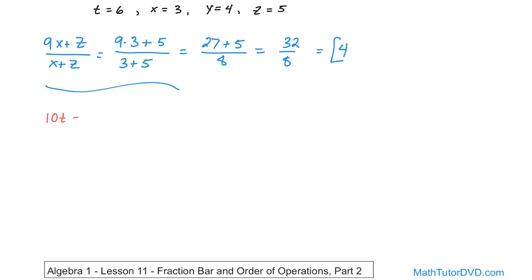10 times t minus z over 10 parentheses t minus z. So let's substitute in. On the top, we have 10 times t, which is 6 minus z. And on the bottom, we will have 10 parentheses t, which is 6 minus z, which is 5.